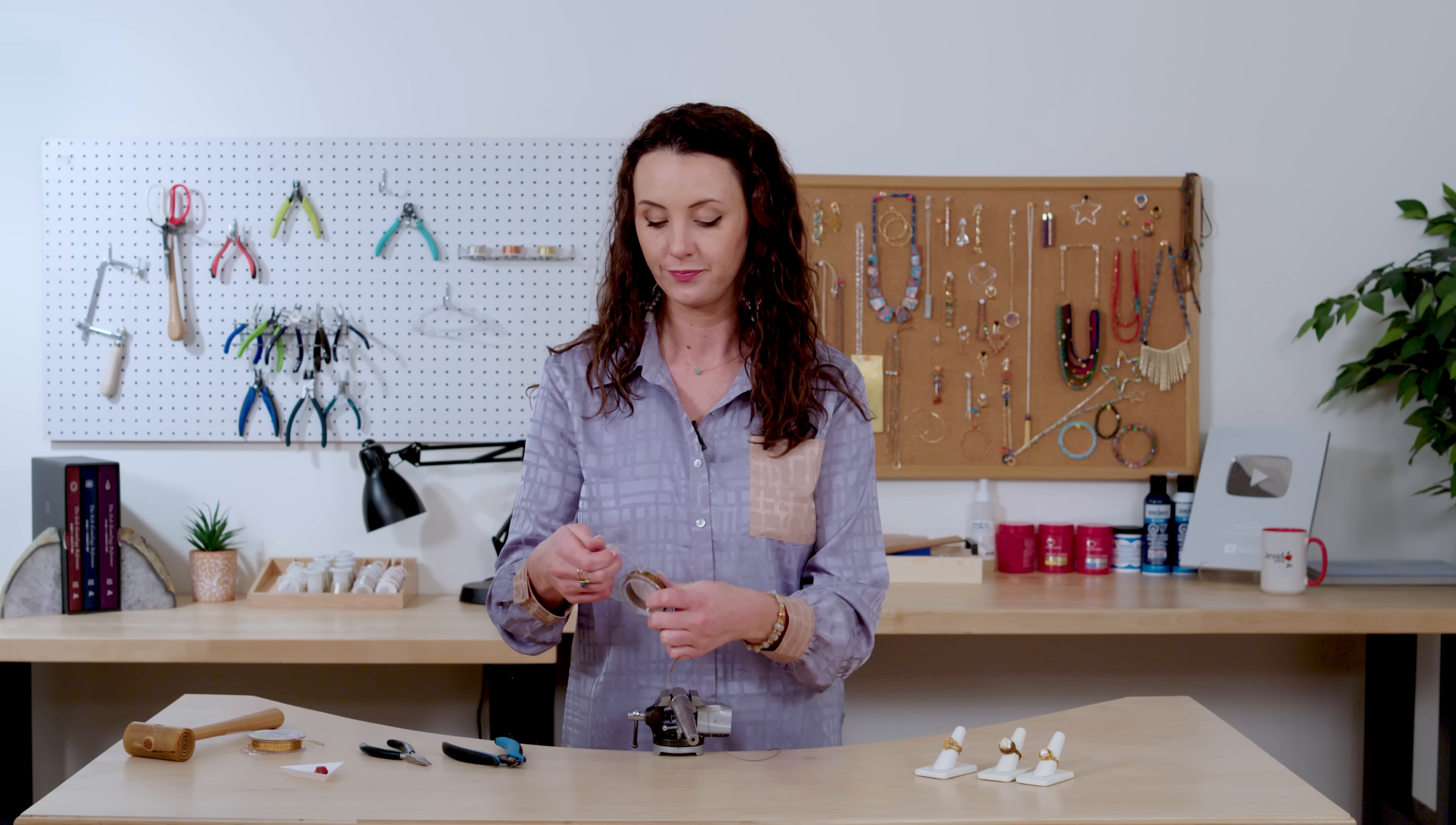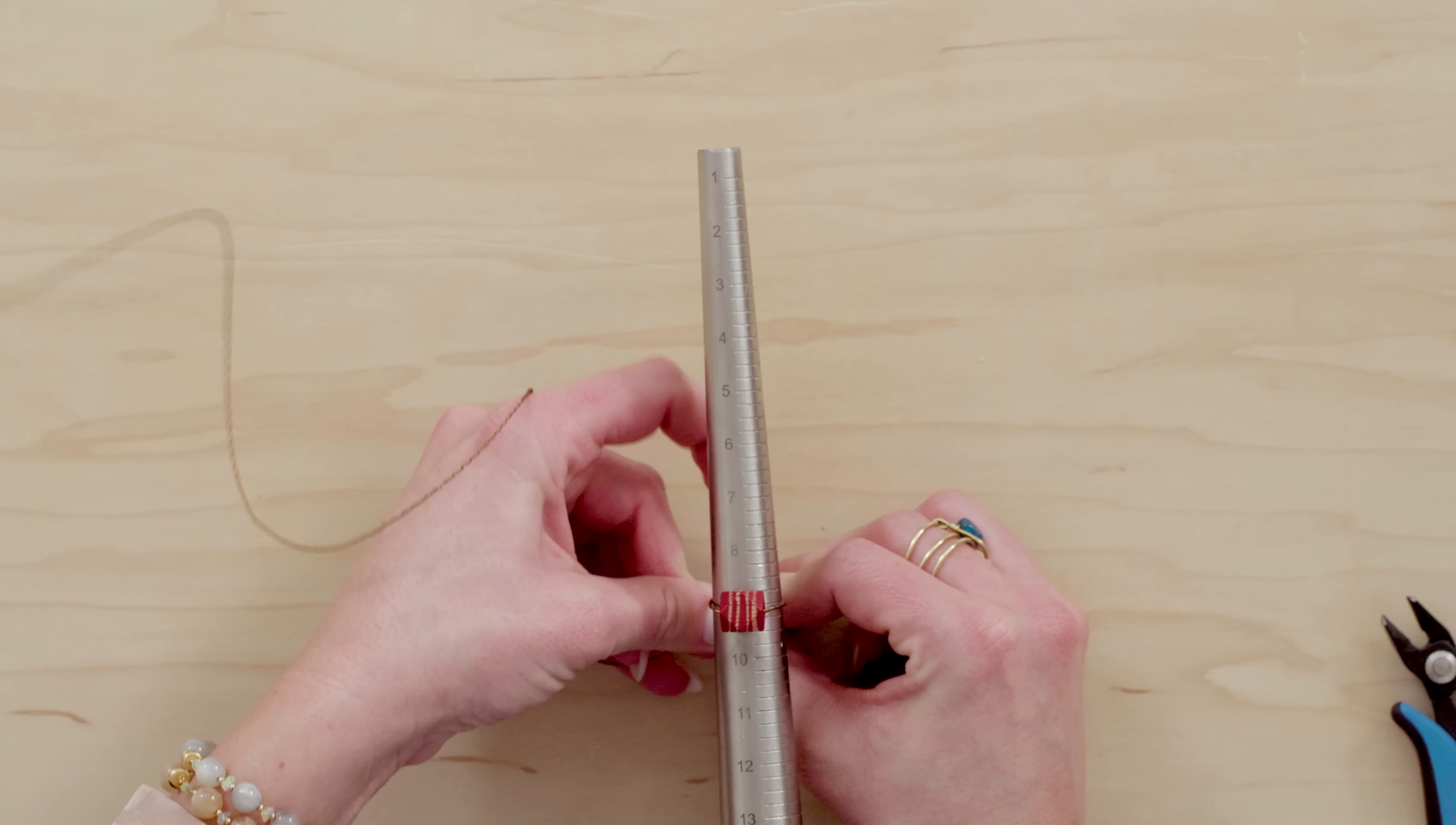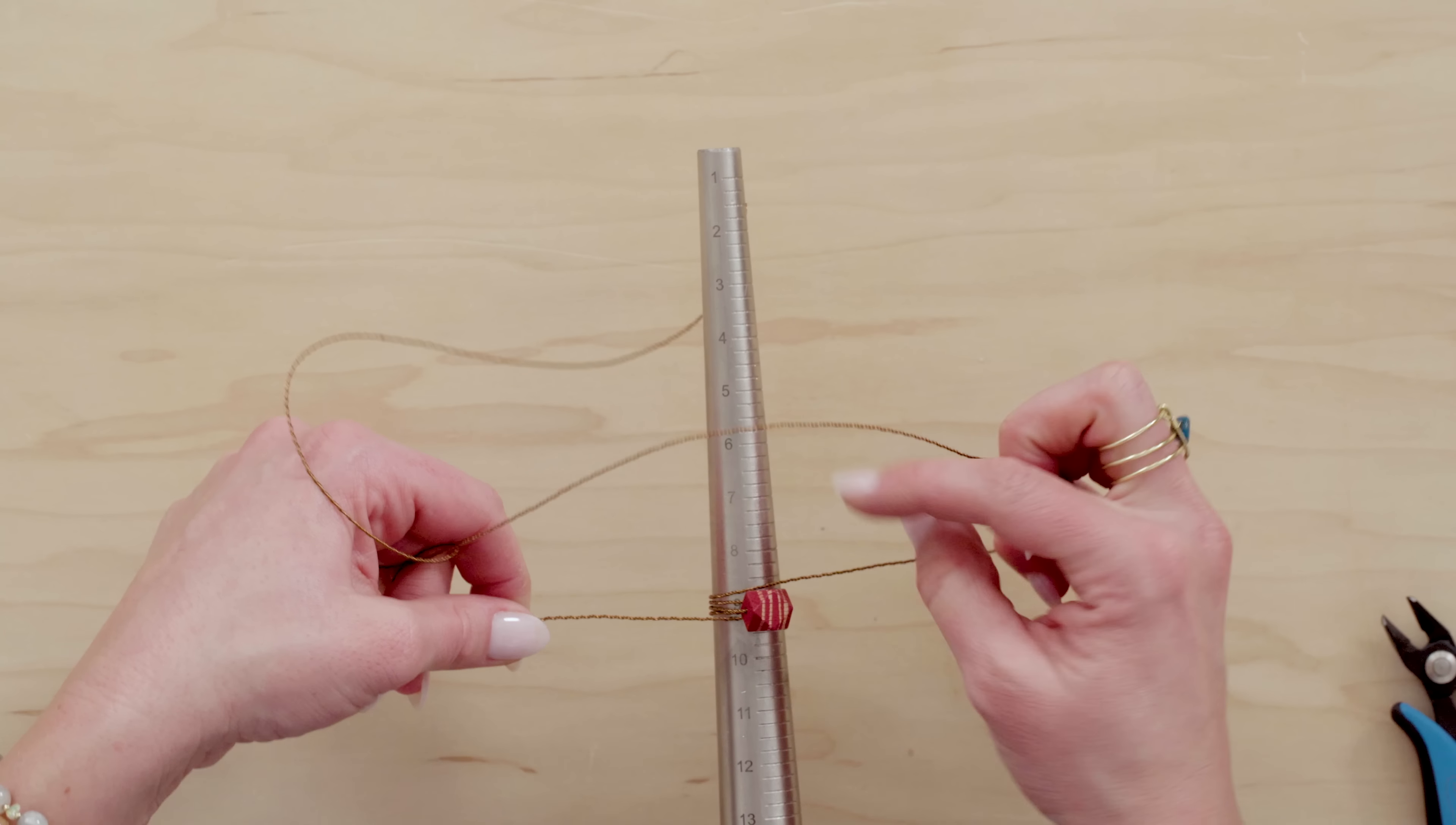I'm going to change to this really pretty antique brass color twisted wire and I'm actually going to pull out about four feet for this one. Okay so make sure your bead is in the middle of your wire and set it down about one size bigger than you want your finished ring to be. And we're going to do the same thing we did before where we wrap both tails around a few times.